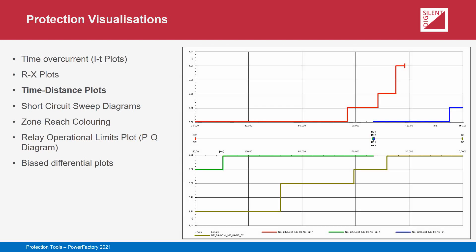Time-distance plots are often associated with distance protection, providing a good visualization of the reach of each zone of each relay in relation to its neighboring devices. They can also be used to visualize overcurrent protection performance. The plots illustrate the variation in relay device operating time as faults are applied at intervals along a specified path. The user can choose the nature of the short circuit — three-phase, line-to-line, or line-to-ground faults — as well as the short circuit calculation methodology, for example the complete method, IEC 60909, or ANSI.